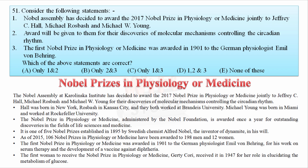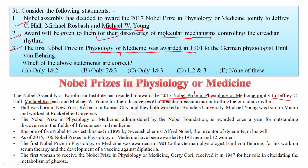The Nobel Assembly decided to award the 2017 Nobel Prize in Physiology or Medicine jointly to Jeffrey Hall, Michael Rosbash, and Michael W. Young for their discoveries of molecular mechanisms controlling the circadian rhythm. The first Nobel Prize in Physiology or Medicine was awarded in 1901 to German physiologist Emil von Behring. All three statements about this prize are correct.